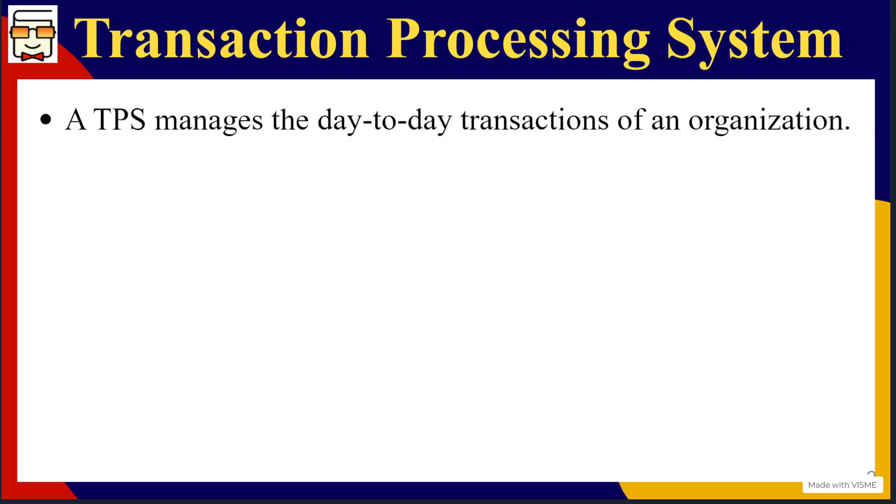A transaction processing system is basically a system that manages or processes the transactions that are happening on a day-to-day basis in an organization. When I say transaction, a transaction is any give and take that involves two or more parties such that all the parties are satisfied — they have some product or service at the end, and each of them either gives the input or gets the output for the transaction.